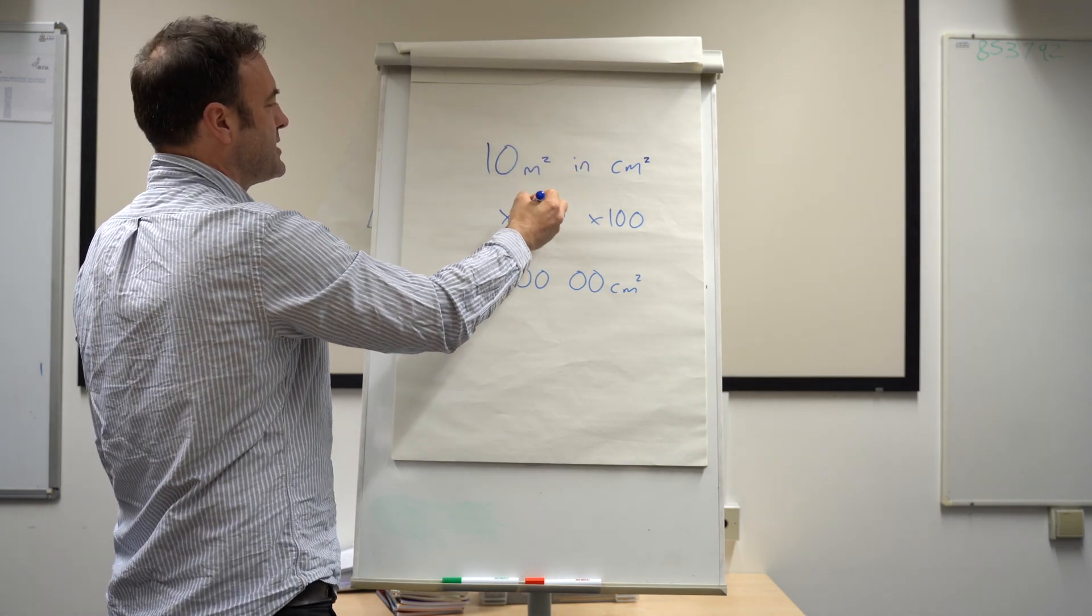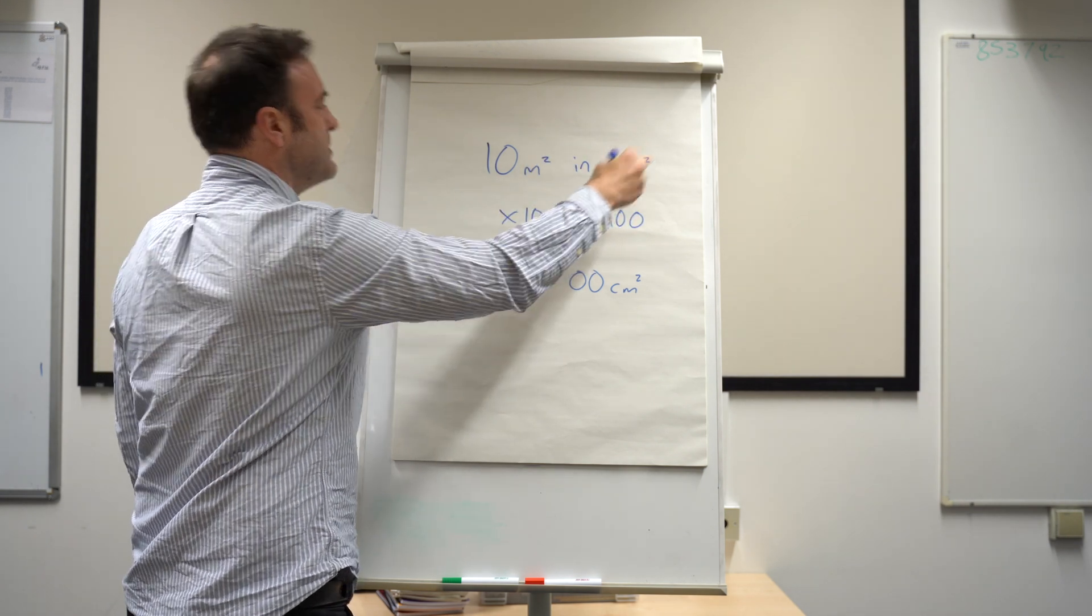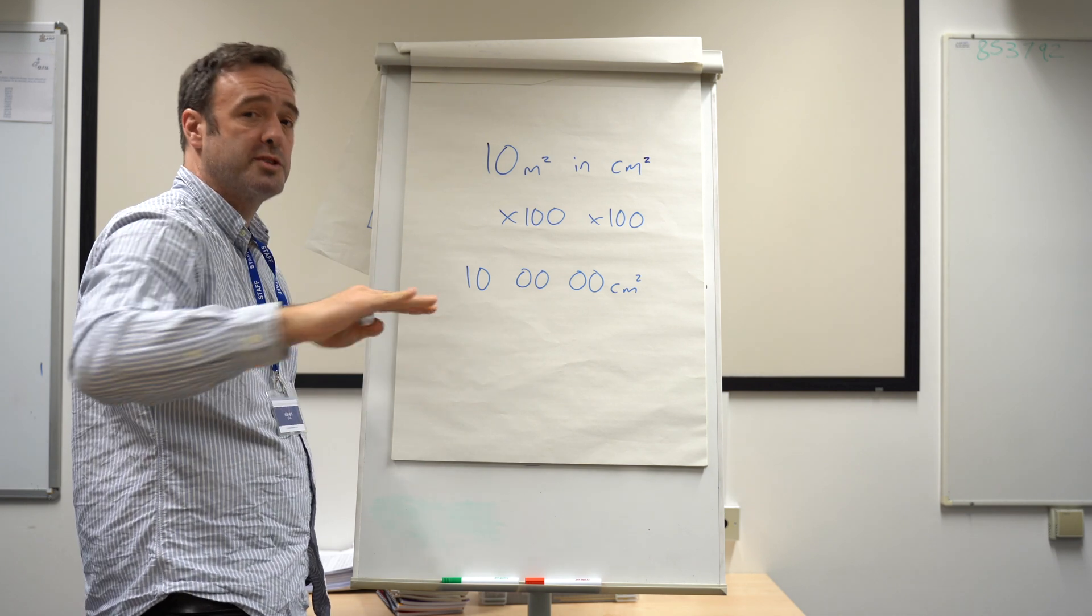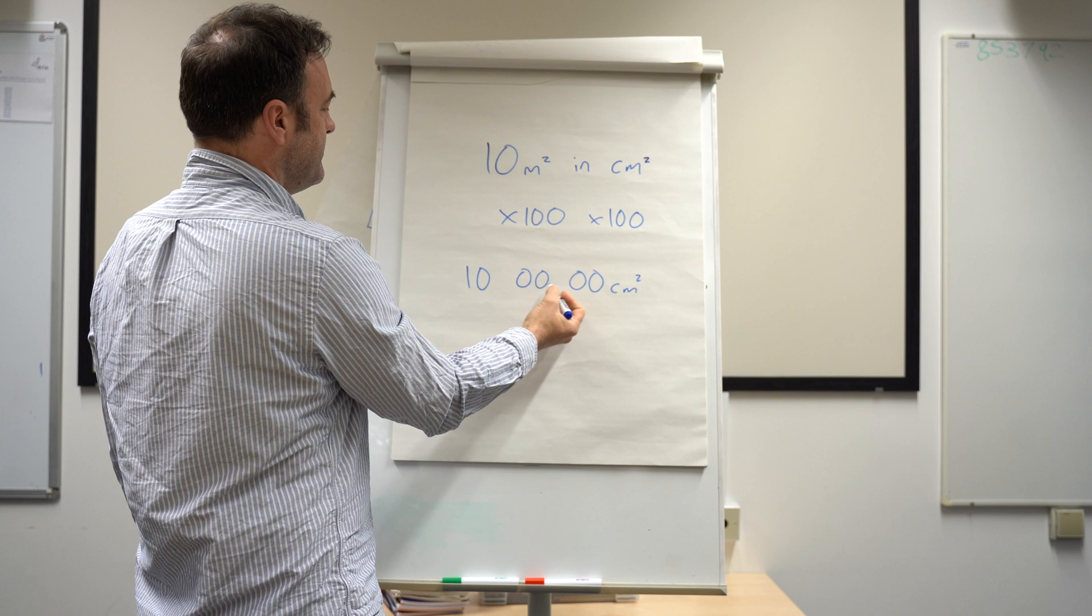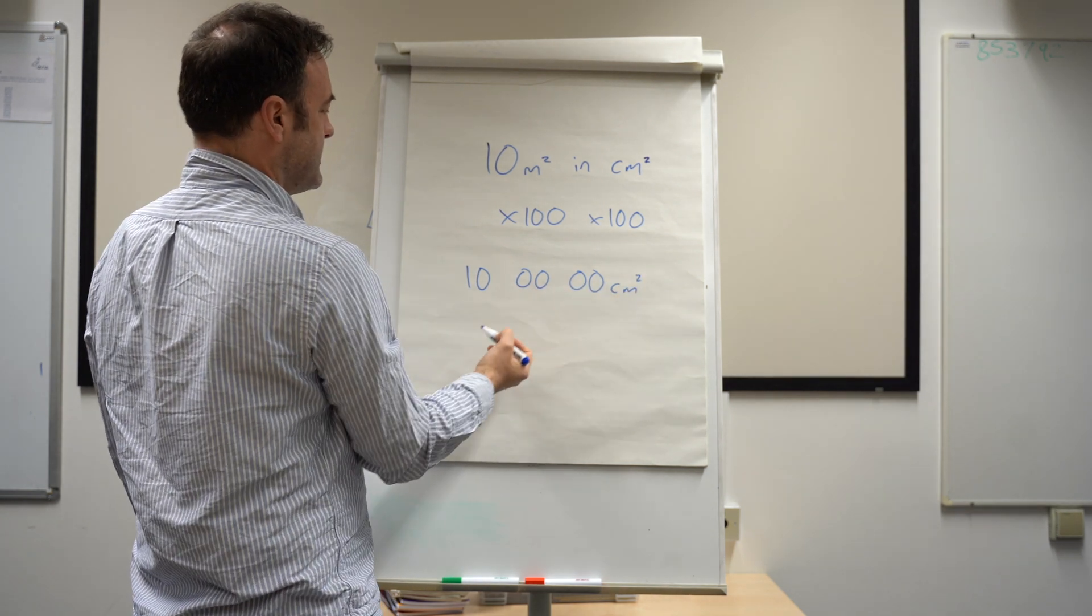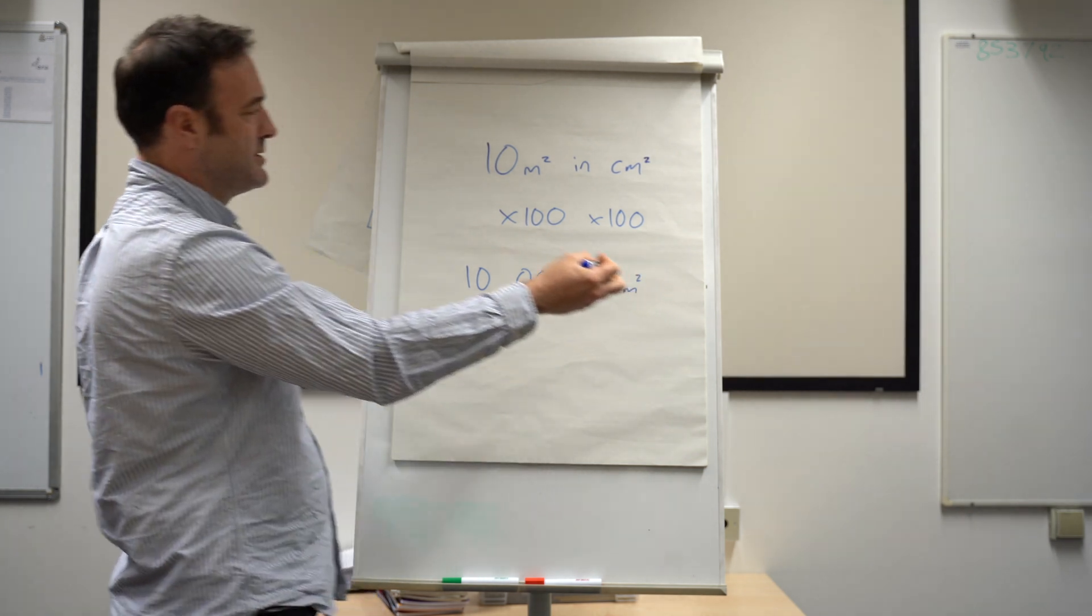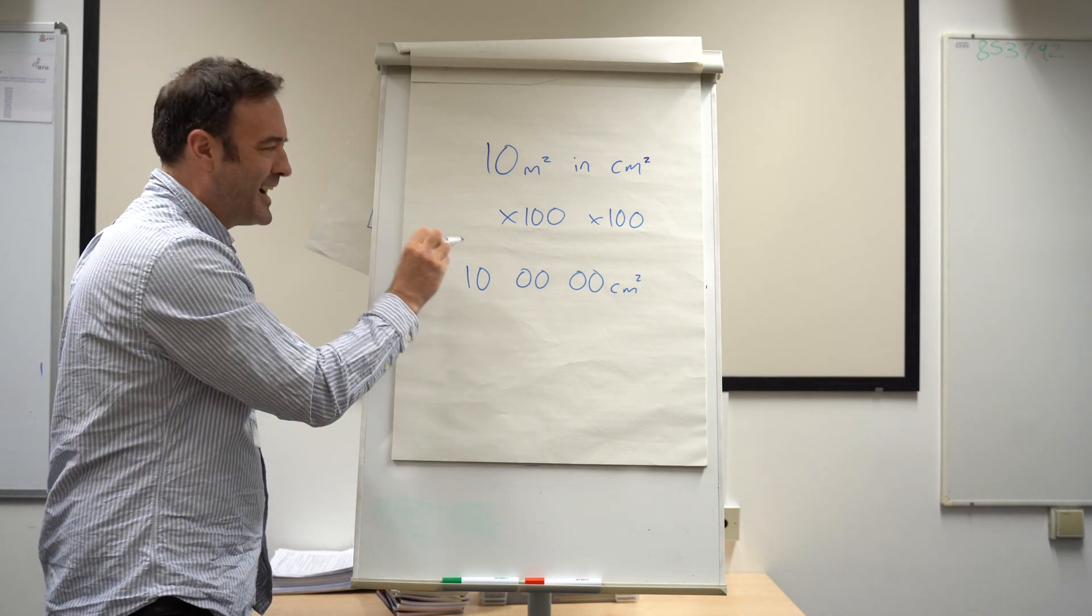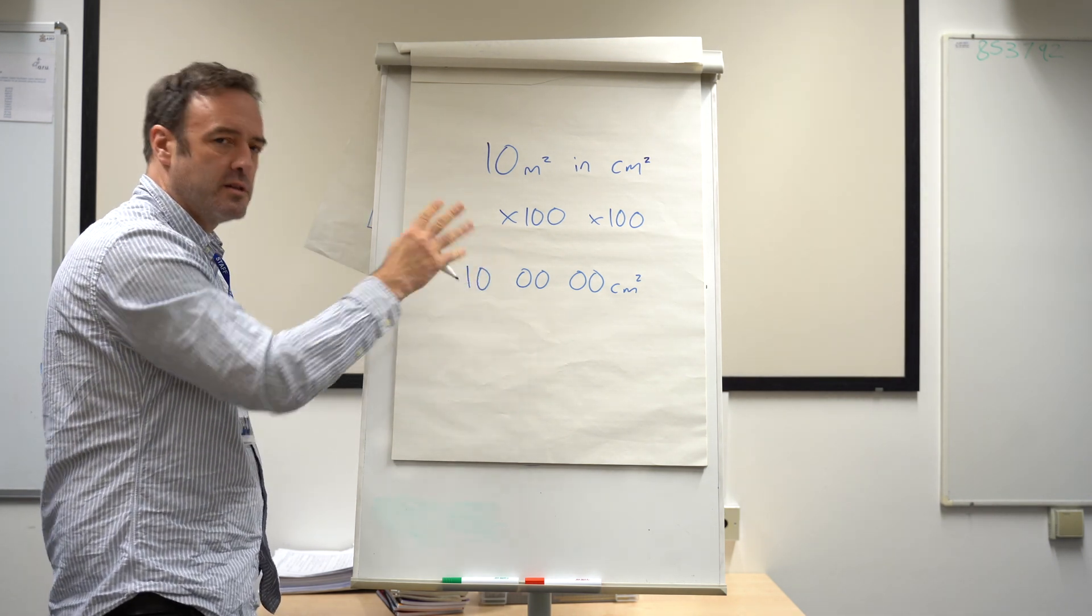But that's not right because it's squared, to the power of 2. So what you do is you multiply by 100, and because it's squared, multiply by 100 again because you're multiplying in two dimensions. So you'd end up with 10, two zeros, two zeros—100,000 centimetres squared. Not many kids get that right. So I think that's a really good one to know about.